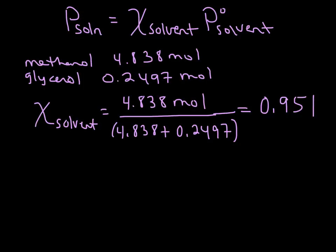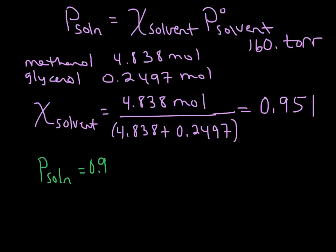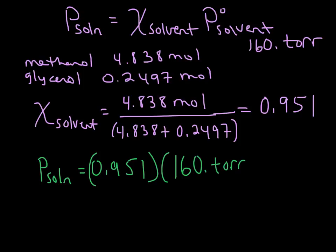We have the pure vapor pressure for the solvent, which was 160 torr, and we now have our mole fraction, so we are ready to calculate the vapor pressure for the solution using Raoult's Law. We plug in the mole fraction of 0.951, which is unitless, and multiply by 160 torr. We end up with 152.16 torr.